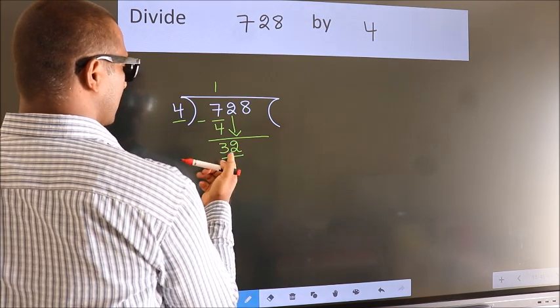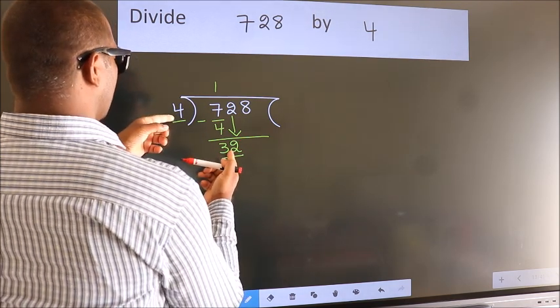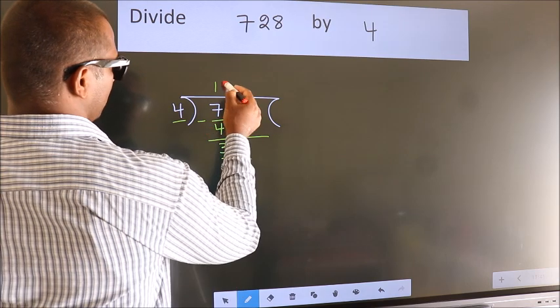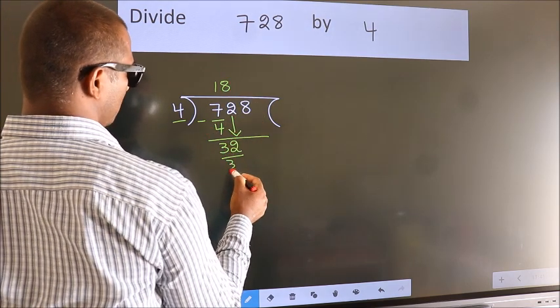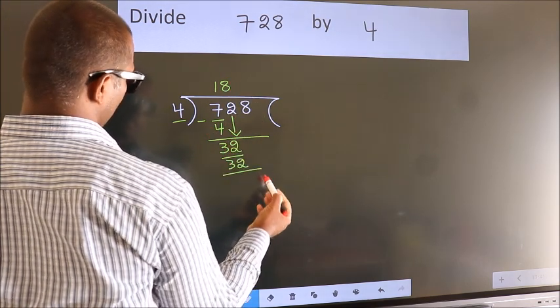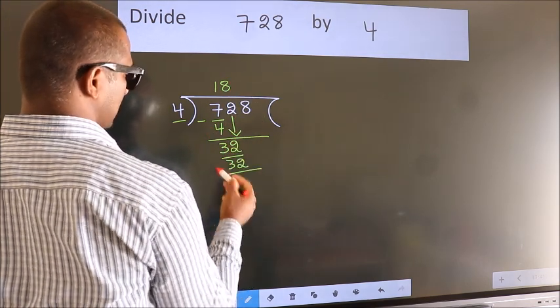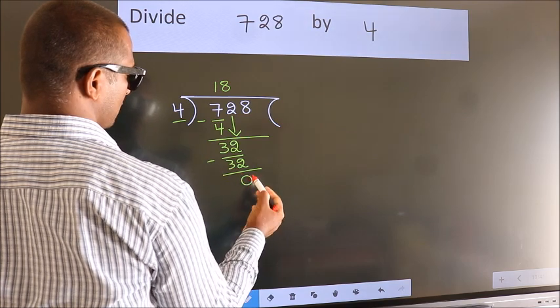When do we get 32? In the 4 table, 4 eights, 32. Now we subtract — we get 0.